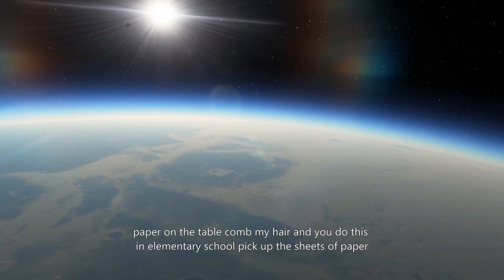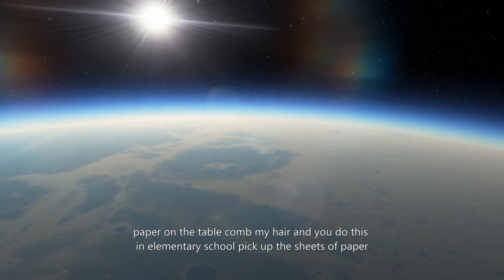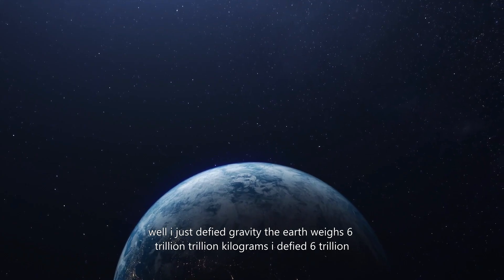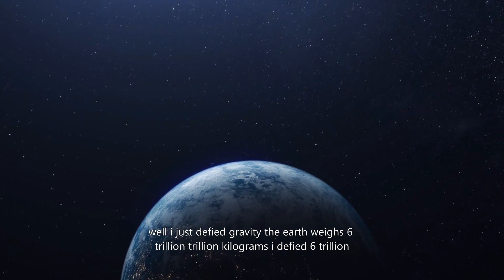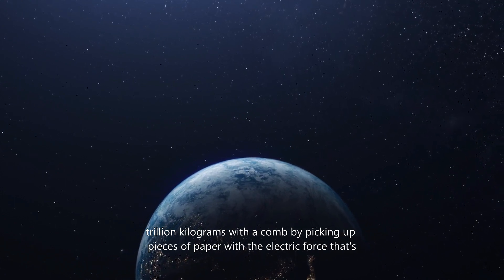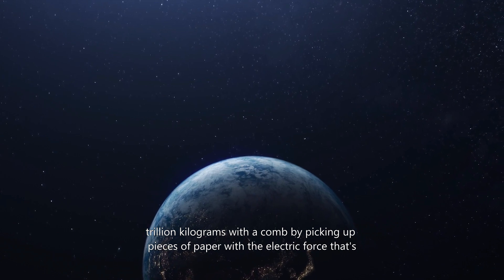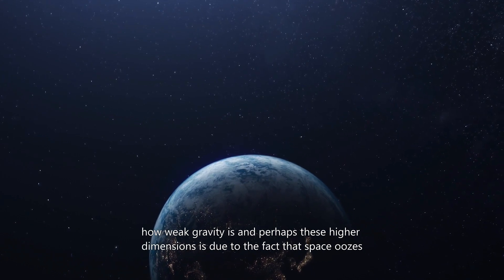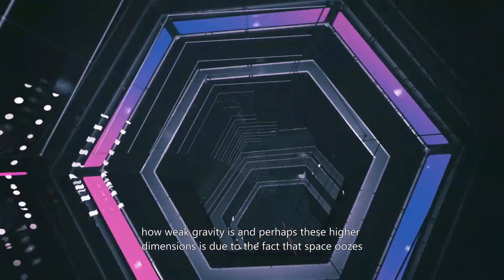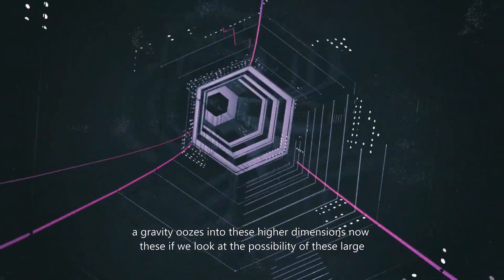That's right. I could put sheets of paper on the table, comb my hair, and you do this in elementary school, pick up the sheets of paper. Well, I just defied gravity. The Earth weighs 6 trillion trillion kilograms. I defied 6 trillion trillion kilograms with a comb by picking up pieces of paper with the electric force. That's how weak gravity is. And perhaps these higher dimensions is due to the fact that gravity oozes into these higher dimensions.